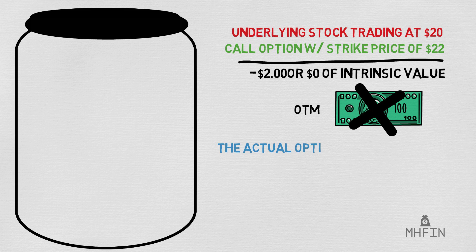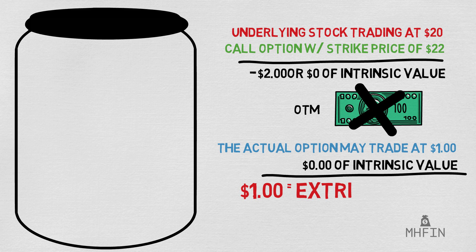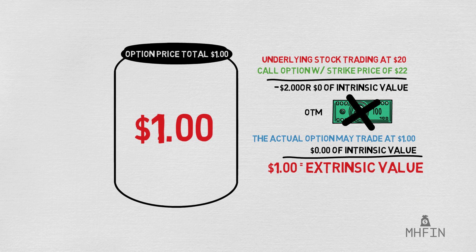Let's pretend that the actual option in our case is trading at $1, and if we subtract the intrinsic value, we get $1 of course, which means that our option priced at $1 is entirely made up of extrinsic value. This also means that Theta is working on 100% of the price, because Theta only applies to the extrinsic value. This makes OTM options much riskier, but also in normal circumstances much cheaper.